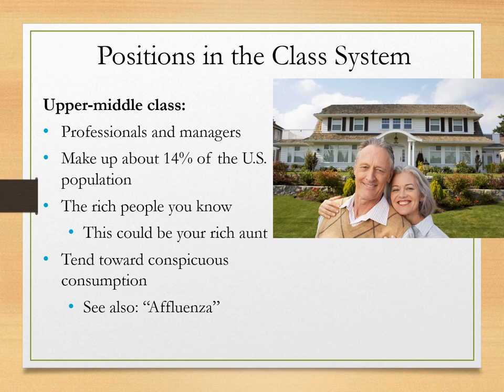The upper middle class are professionals and managers in our society, making up about 14% of the total US population. If you know some rich people, these are probably the rich people you know. The upper middle class, as opposed to the upper class, has a tendency toward conspicuous consumption — they tend to spend money in ways other people can see. They have large houses in visible locations, fancy cars, and tend to dress very fancy when others will see them, rather than scaling back the way the 1% does.